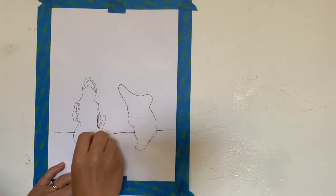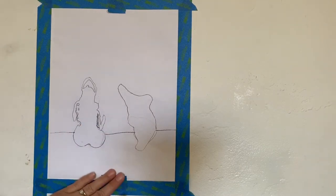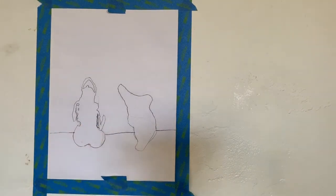I've also drawn a horizontal line moving left to right across my paper. This is what grounds our objects and helps us to begin creating the illusion of depth, or space.